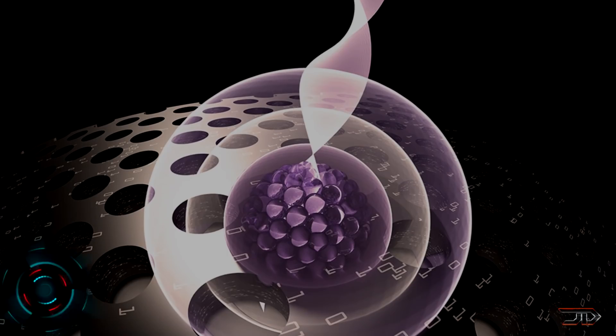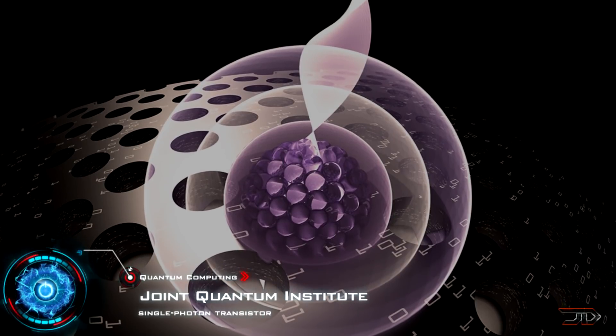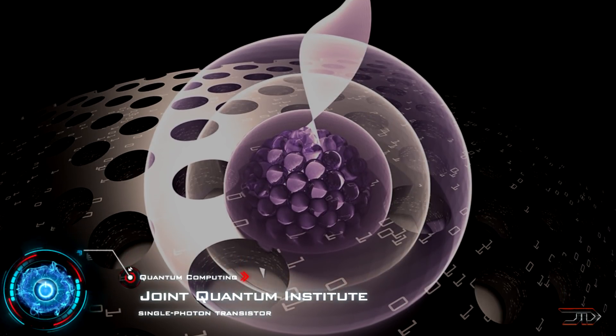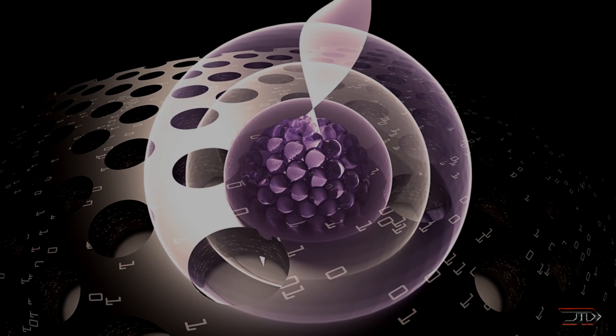But one recent notable development involves Joint Quantum and their single photonic transistor. They claim that one million of these transistors could fit inside a couple of millimeters and process 10 billion photonic qubits every second.